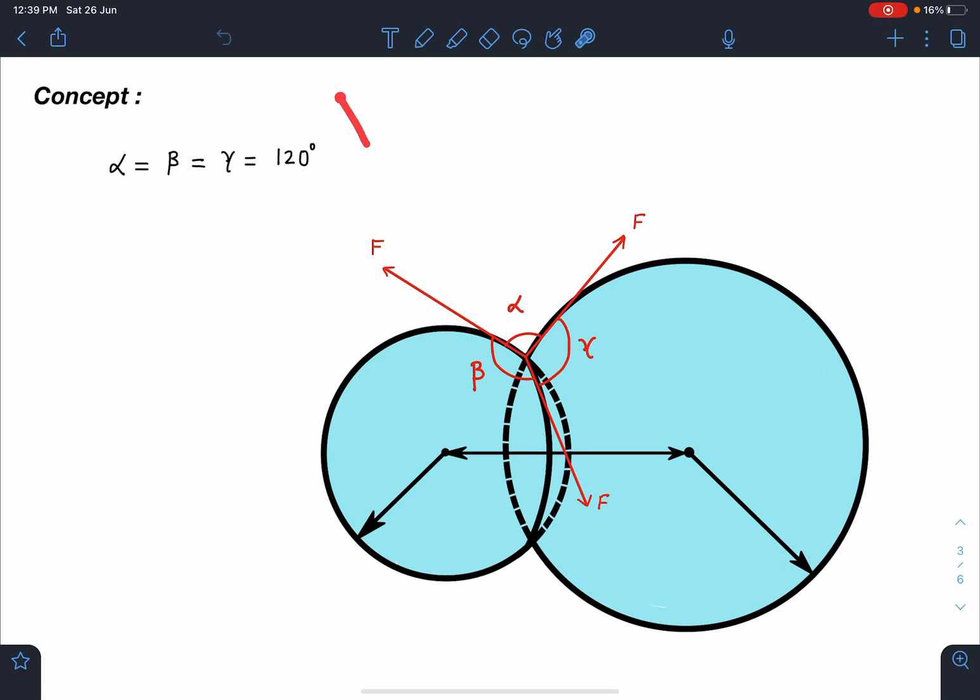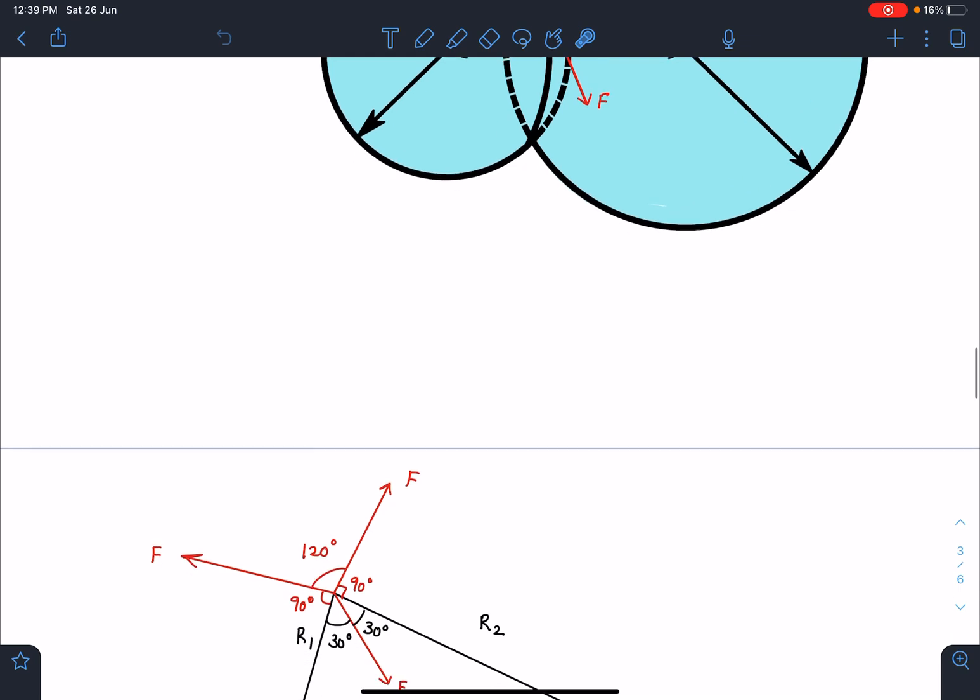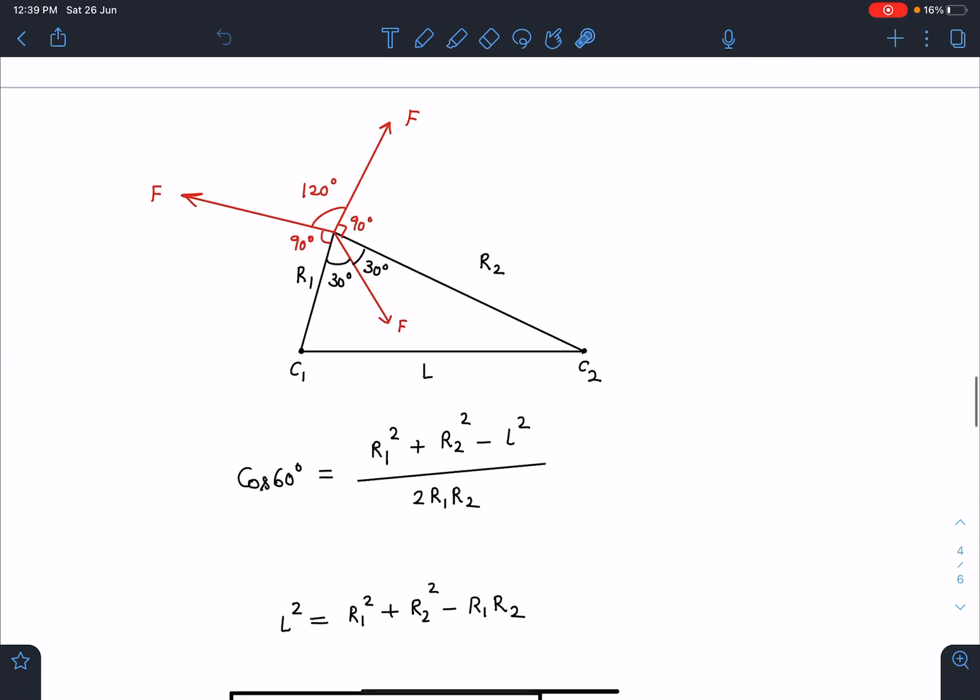These forces are equally inclined, so alpha, beta, gamma all are equal and this is going to be 120 degrees. So the first thing which you must notice in merging problem of soap bubbles is that these angles are going to be same. Now next part, if you see here, this is the force F and it is going to be perpendicular to this radius.